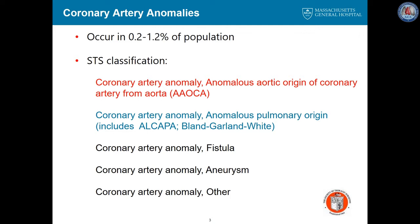There are other anomalies such as anomalous pulmonary artery origin, which includes ALCAPA and the Bland-Garland-White syndrome. There are also fistulae and aneurysms from the coronary arteries.